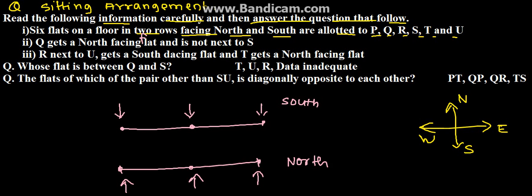Therefore, Q gets a north facing flat, so it is in between these three. But it is not next to S, which means S will be at one corner and Q will be at the other corner.